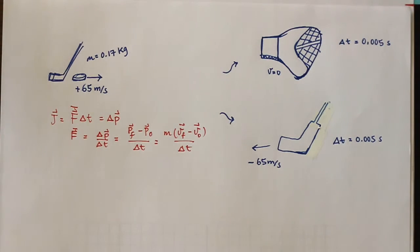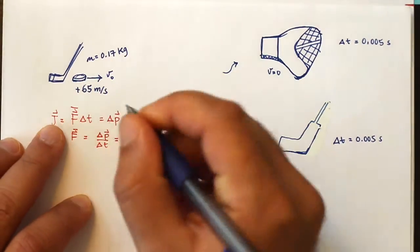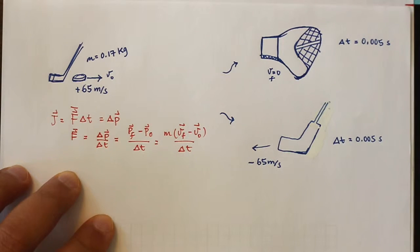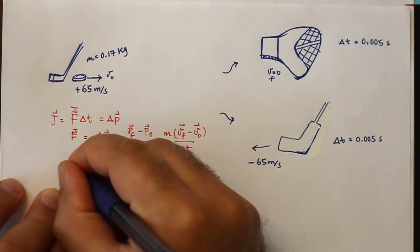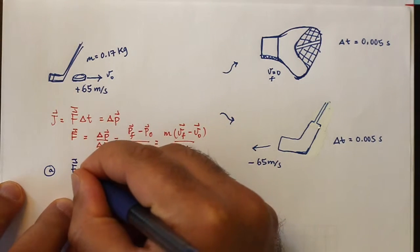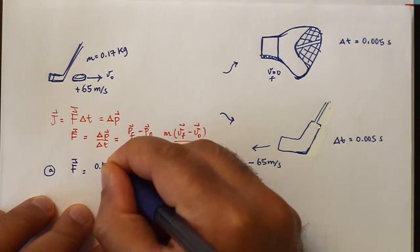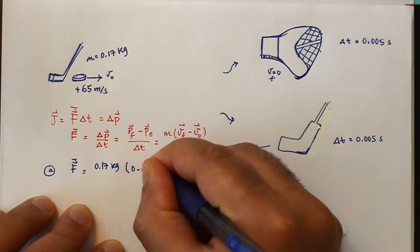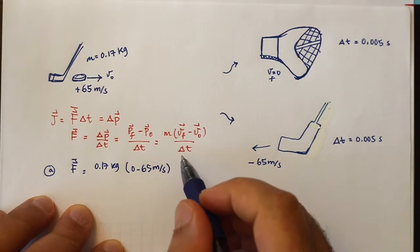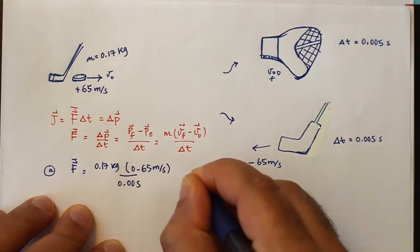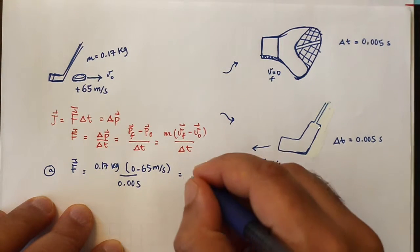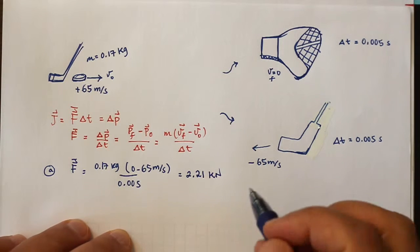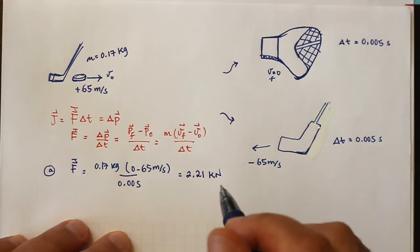Now let me apply it to the two situations. In the first situation, the initial velocity was 65 meters per second, the final velocity was 0 because the puck stops, and I know the change in time and the mass. The average force equals the mass — 0.17 kilograms — multiplied by the difference in velocities (final minus initial), divided by the change in time of 0.005 seconds. Working that out gives 2.21 kilonewtons, or 2210 newtons.